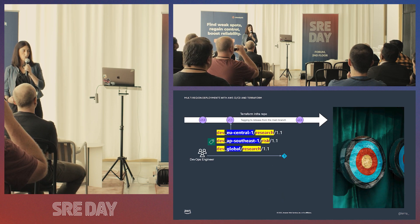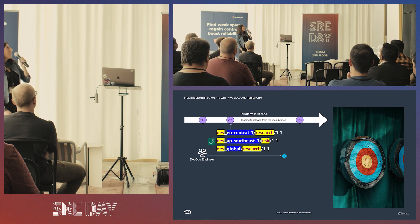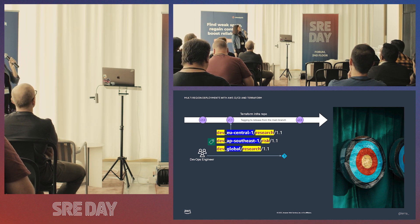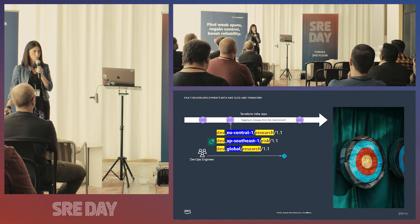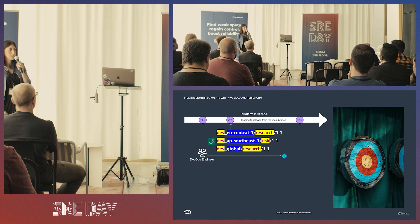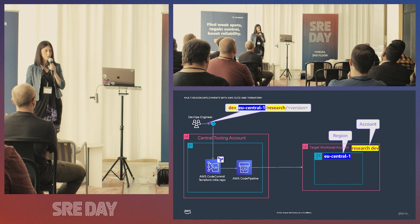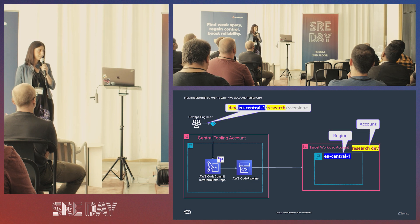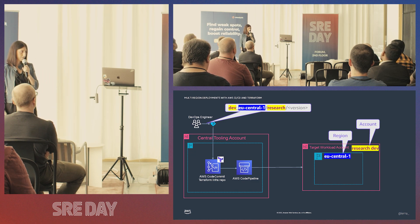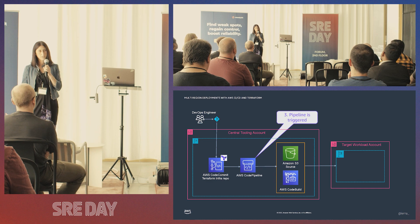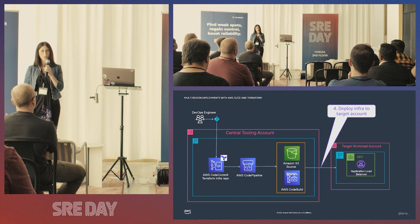The git tags are opinionated and carry meaning about the deployment target. The convention is: environment type (dev, QA, staging, prod), then deployment scope (region or global), then team or business unit name, then a version number. For example, a tag of dev-eu-central-1-research-v1.0 tells the pipeline to target the research dev account in the eu-central-1 region for core infrastructure deployments. Upon tag creation the pipeline is triggered and core infra gets deployed into the target account according to the blueprint.